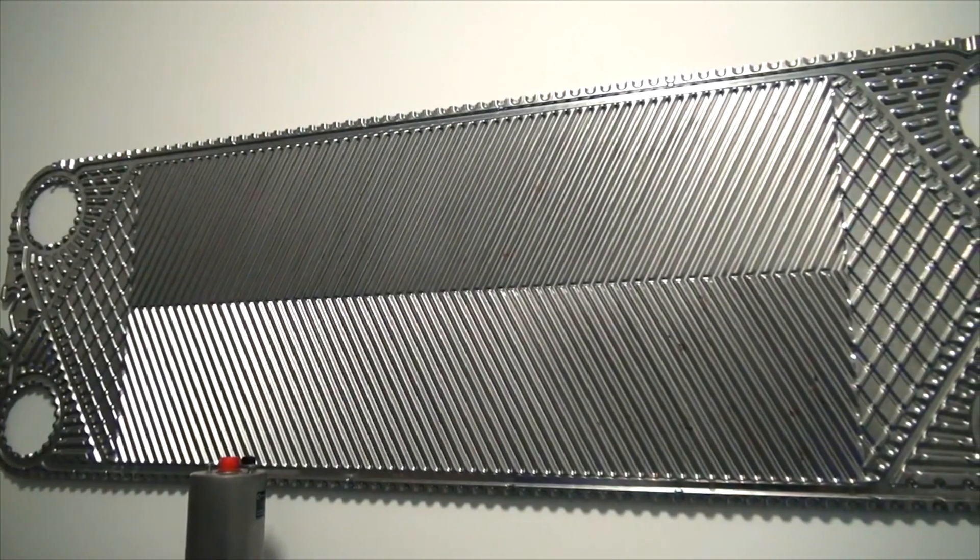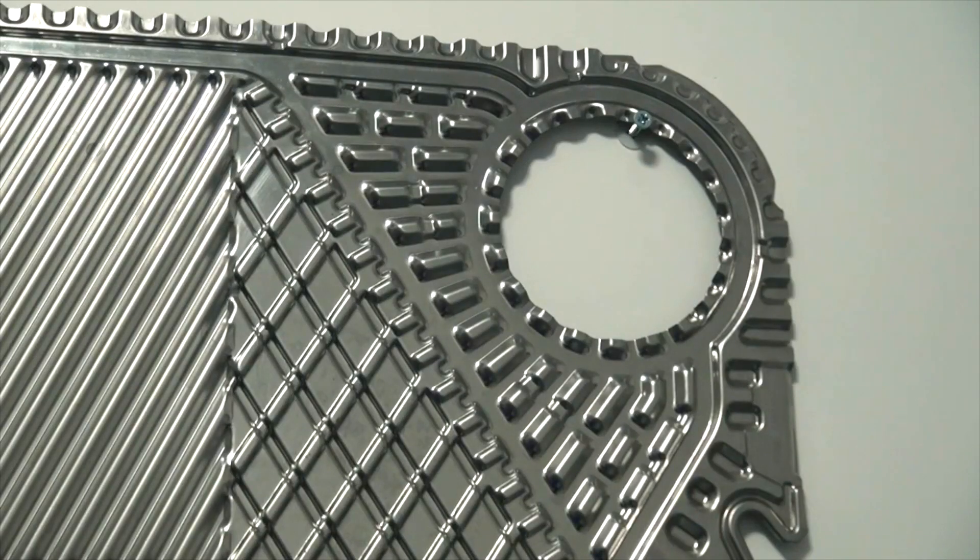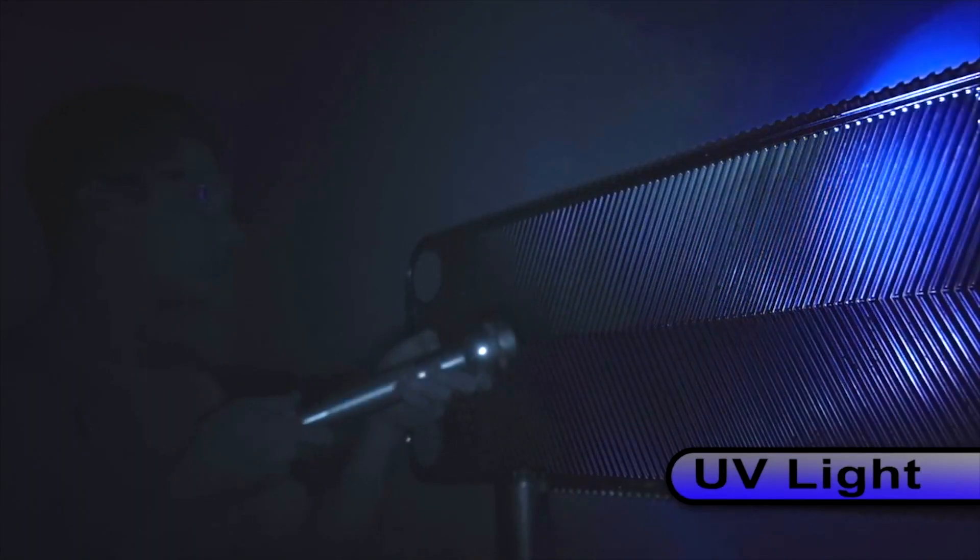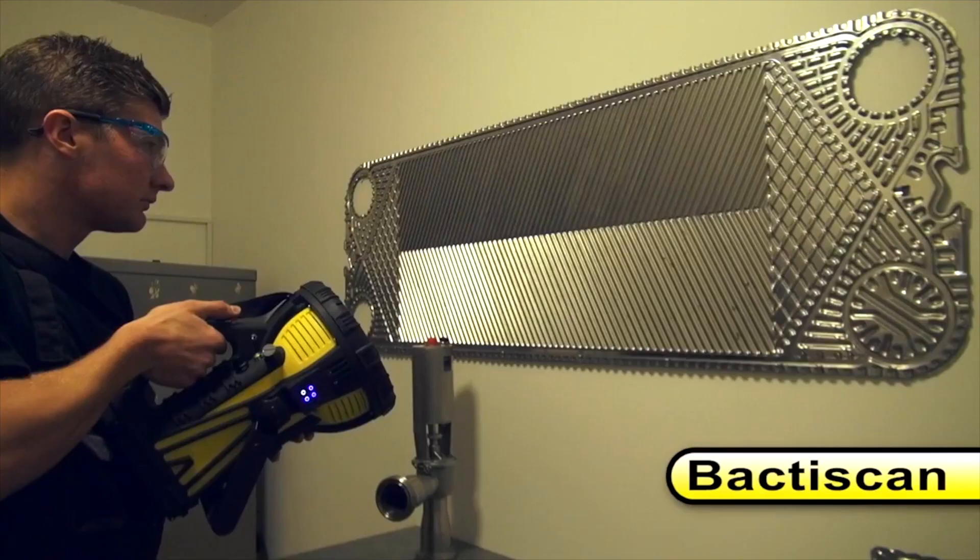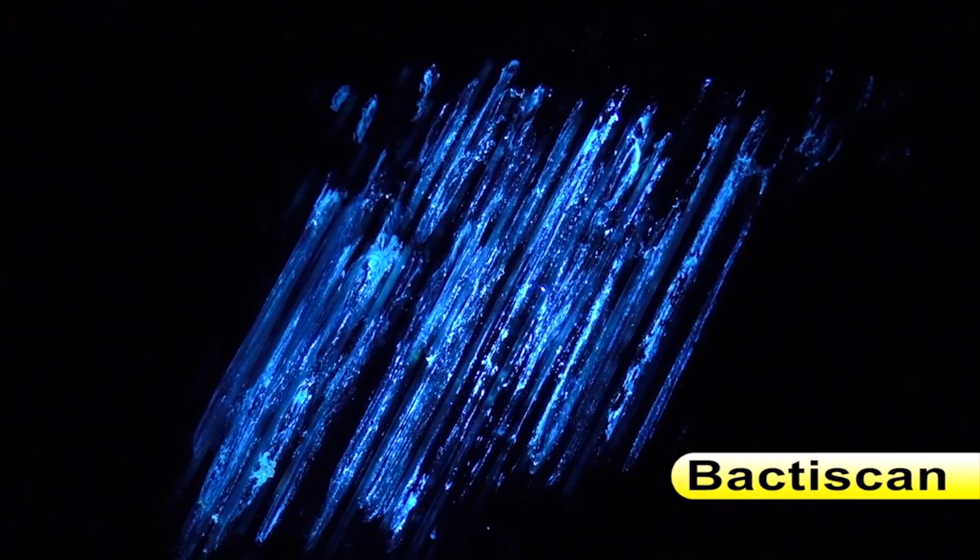These heat exchanger plates were removed from service and under white light they look clean. Under UV light again there is no evidence of bacteria or contamination, but when viewed with Bactiscan you can clearly see the proteins fluorescing before your eyes.